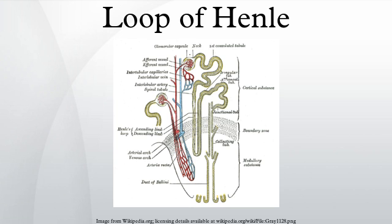The ascending limb is also called the diluting segment of the nephron because of its ability to dilute the fluid in the loop from 1200 mOsm/L to 100 mOsm/L.